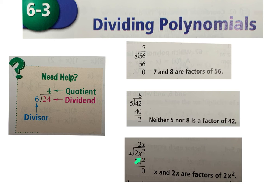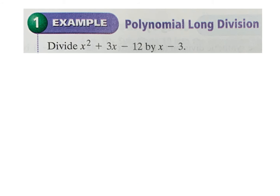You can apply the practice of long division to polynomials. So the first thing we're going to do is long division of polynomials. Divide x² + 3x − 12 by x − 3. On the inside of the division symbol, we put x² + 3x − 12.